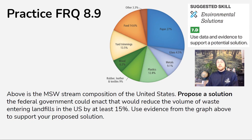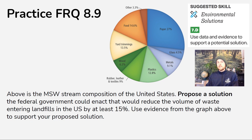For practice FRQ 8.9, look at the makeup of MSW in the United States and try to propose a solution that the federal government could enact to reduce the volume of waste entering landfills by at least 15%. You need to use evidence from the graph to support your proposed solution. Pay attention to that 15% reduction target and make sure you're using evidence from the graph to support the solution you've proposed.